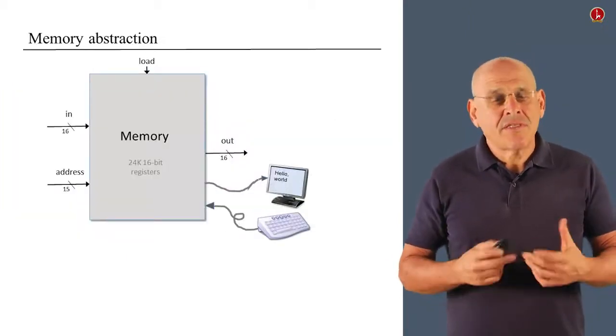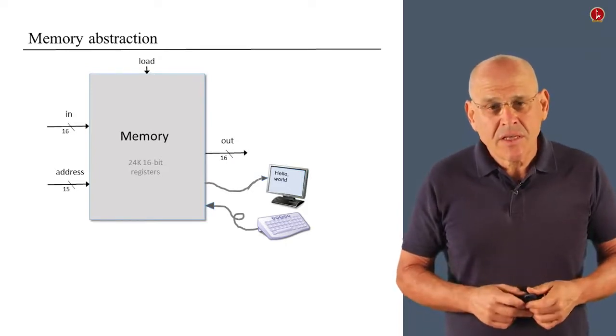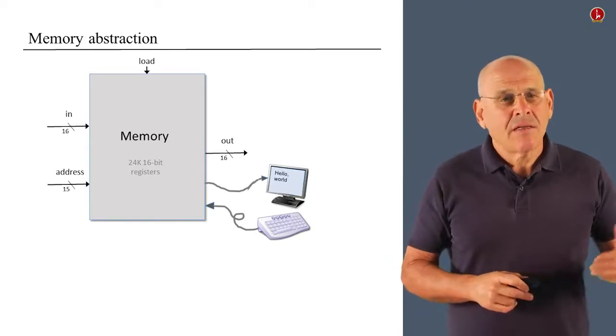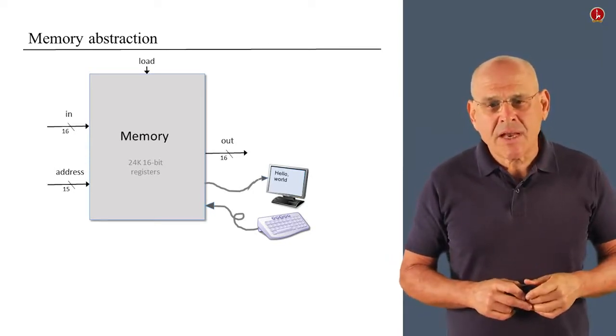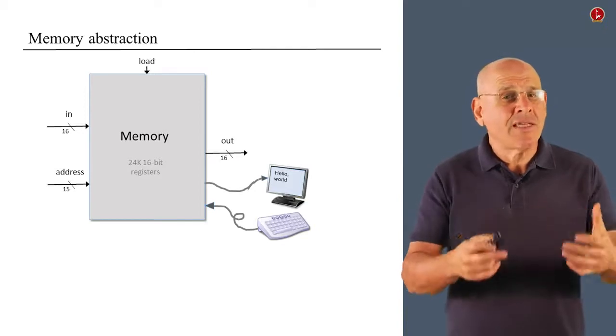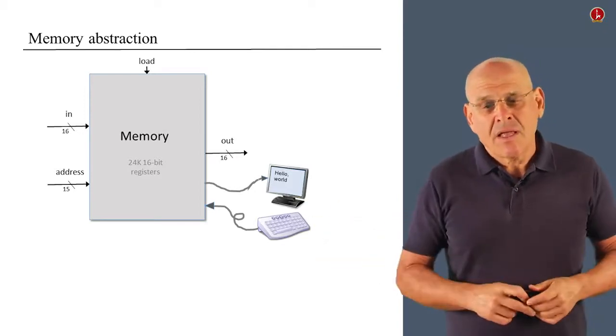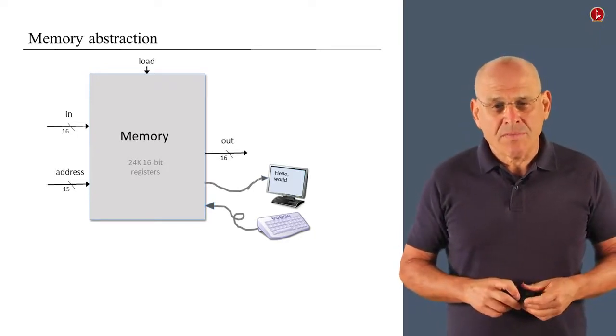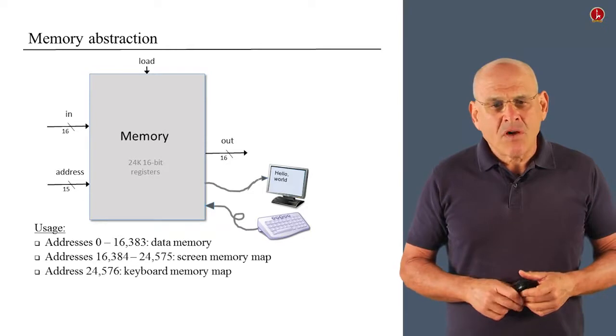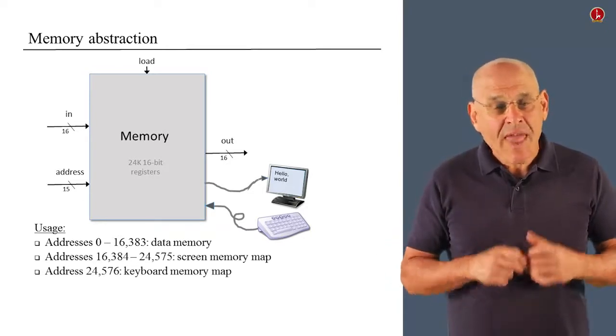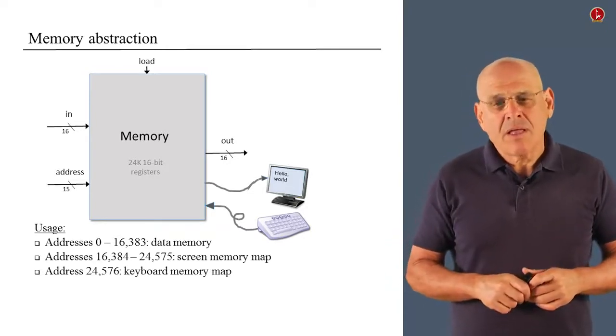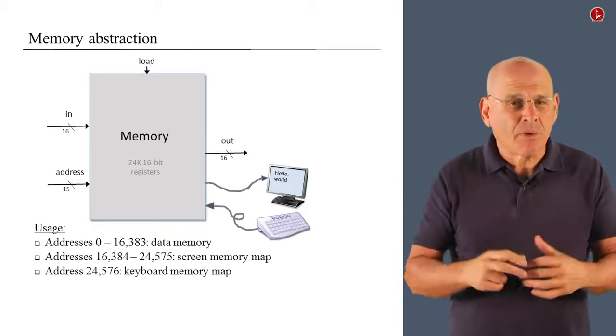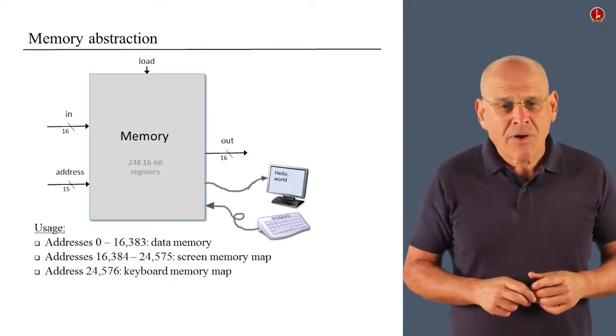All right, so this is the memory abstraction. It's a single address space that has an in and address inputs and an out output. And it also has this nice side effect of refreshing a screen and probing what the user is doing with the keyboard. Now, the overall address space of the HACK memory consists of three logical segments. Now, there's no physical separation, but there's a logical separation, if you will.